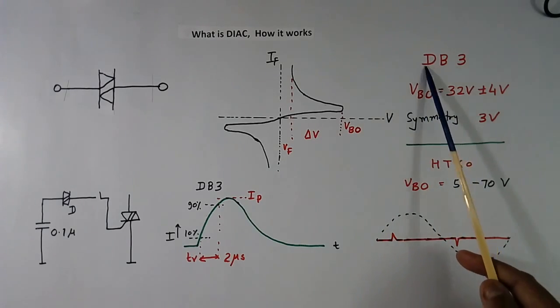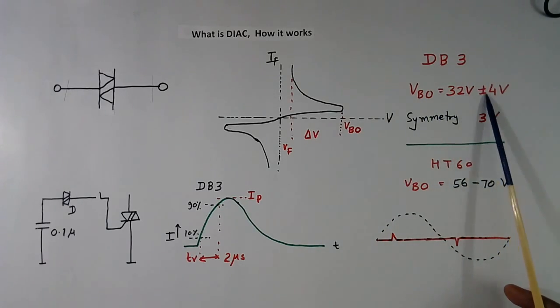For example, for DB3 type, it is 32V plus minus 4V. For HT60 diode, VBO is, break over voltage is 56 to 70V. It can be anything in between.